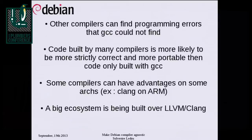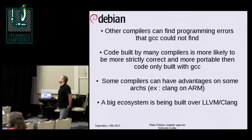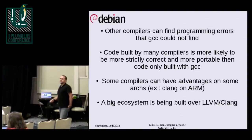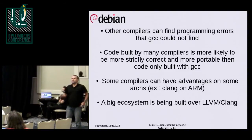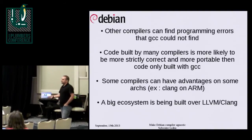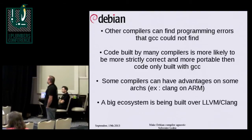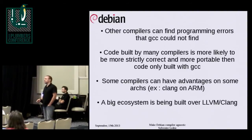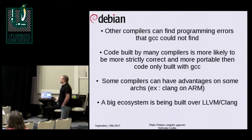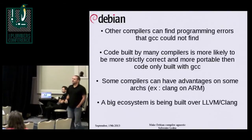Some of the advantages of Clang: it detects more errors and warnings than GCC. The more different compilers you use to compile your software, the more it will improve the quality of your code by detecting more errors and finding bugs. Even with Visual Studio, you can find bugs that GCC is not able to find. The folks at ARM say that Clang is better than GCC on their architecture, and now a big ecosystem is being built over LLVM and Clang.